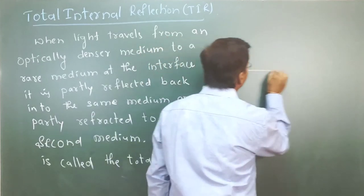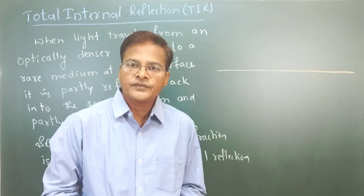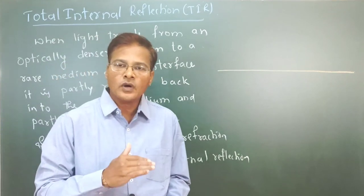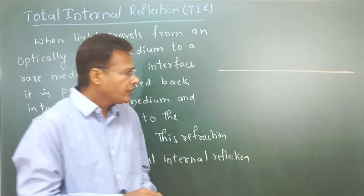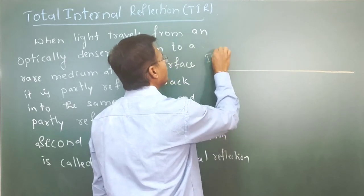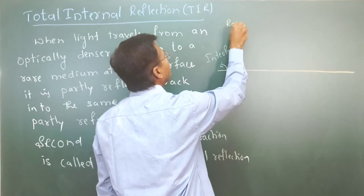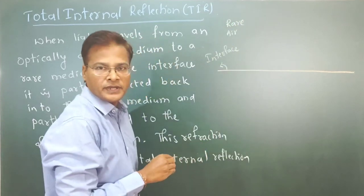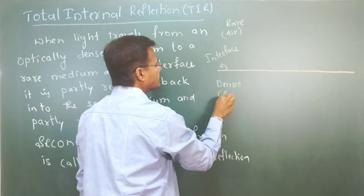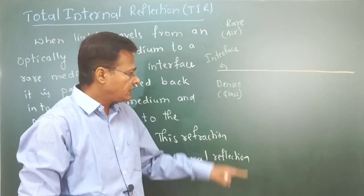This is the one interface. Interface means the surface where refraction takes place — that we call the interface, which separates the rarer medium and the denser medium. So this is the rarer medium — it may be air. Denser medium means it may be glass or water. When a ray travels from denser medium to the rarer medium — for example, this one is glass.